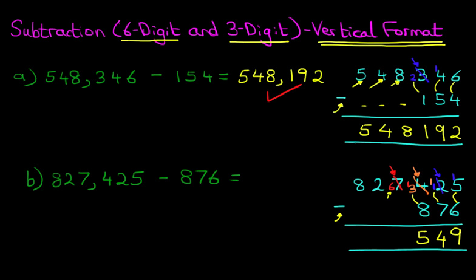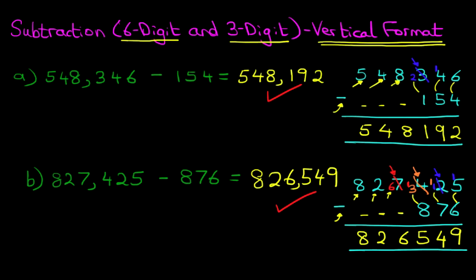As for the other digits, because they are subtracting nothing, they remain the same. So we can write those in — we've got 6 and 8. And we have reached our answer: it is 826,549. And we get a nice big tick. That is how we subtract a 6-digit number and a 3-digit number using the vertical format.